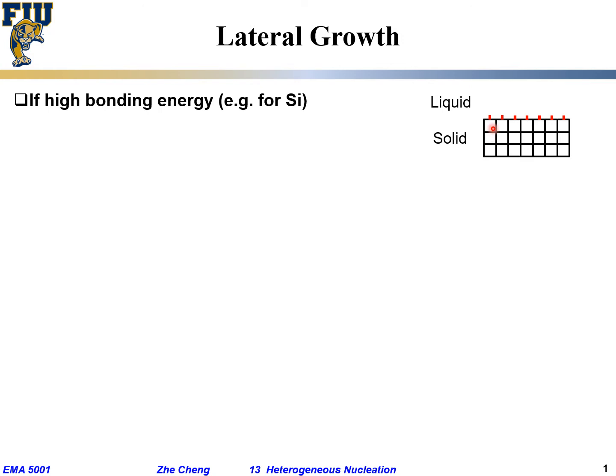So at the interface, we would have so-called — you saw those red dashes — what do those mean? We call them so-called dangling bonds: the unsatisfied bond at the solid, because in the liquid it is packed less dense. That would be the so-called actual bond that is not satisfied — a dangling bond.